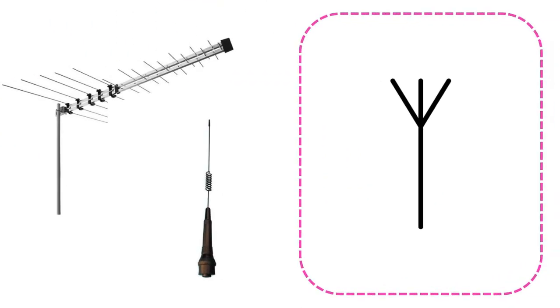Antennas used to receive or transmit radio signals are shown in circuits with the symbol here.